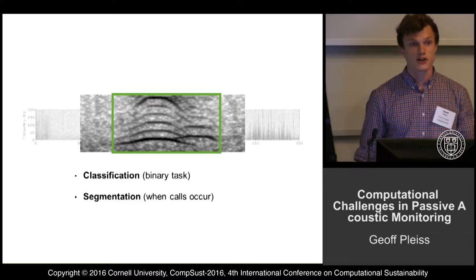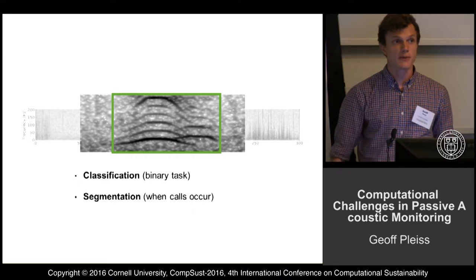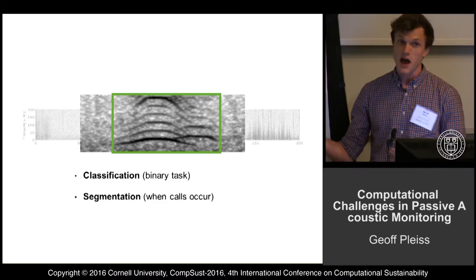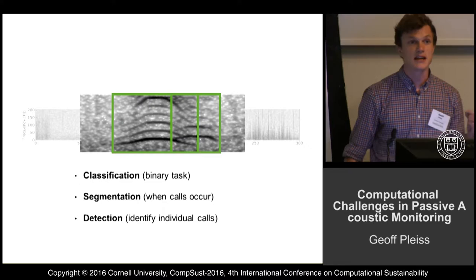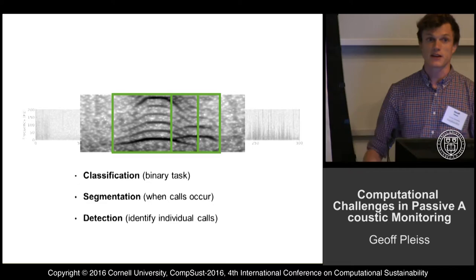If you take a look at this waveform, there are two distinct sets of lines, and this corresponds to two elephants making calls. If I'm trying to build a population model based off of this data, I need to know that there are two elephants here, not just one. So I need to detect the individual calls and unmix the signal, and this is becoming a much more complex machine learning problem.